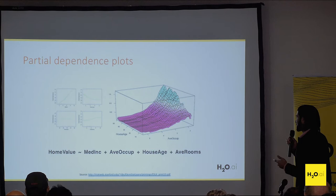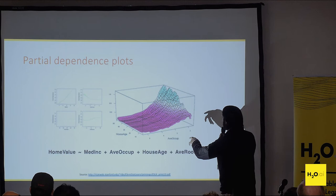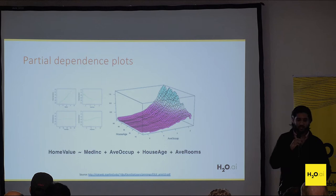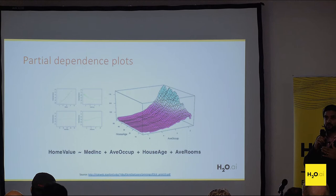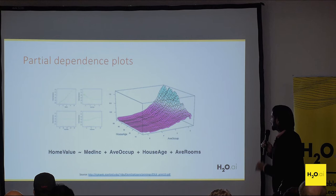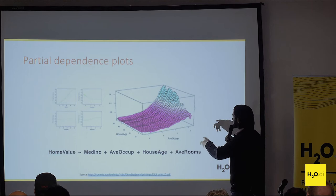For example, let's say we're looking at a housing dataset with a variable like house age. A PDP plot for that would go across different bins of house age, set that to every row in the data, score, and give you the average prediction across these different values. It gives you a sense of how the model is responding to age.